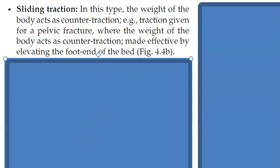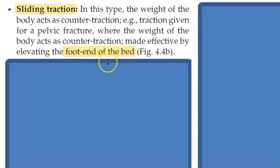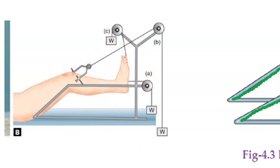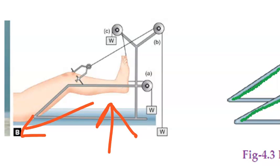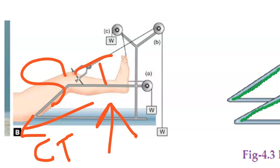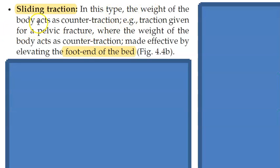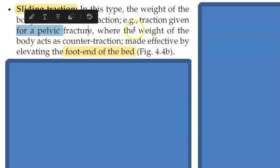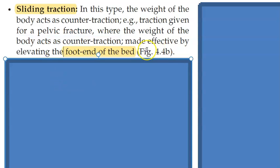Now look at sliding traction. Sliding traction is where the weight of the body acts as counter traction — that is when you elevate the foot end of the bed. Look at the Bower-Brown splint. If you elevate the foot end of the bed, gravitational forces provide the counter traction. So this is sliding traction. In pelvic fracture they will give this. The weight of the body acts as counter traction, made effective by elevating the foot end of the bed.